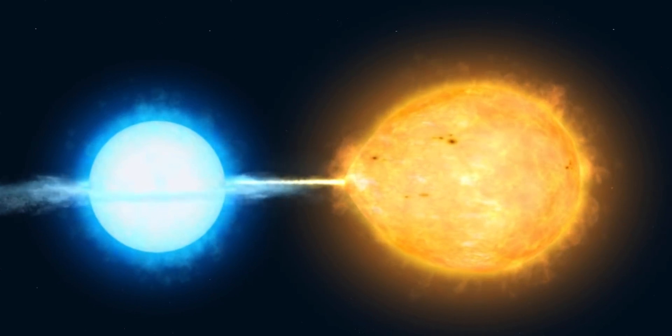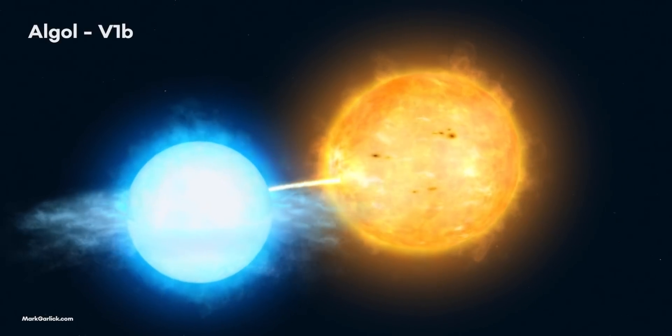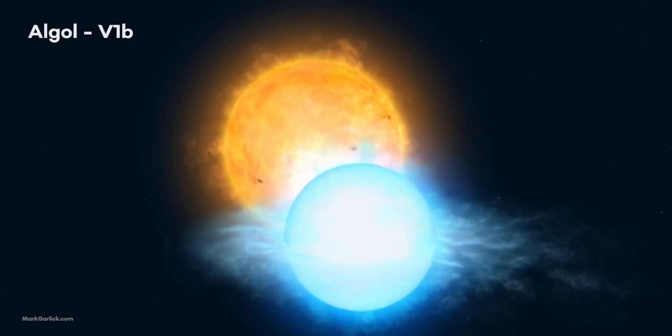Here's how a binary system appears. Notice how the stars rotate around each other in some sort of dance.